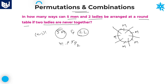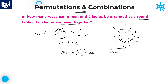The required answer is 4 factorial × 5P2. Here, 4 factorial is 24 and 5P2 means 5 × 4 = 20. So 20 × 24 = 480. Therefore, 480 is the required answer for this question.